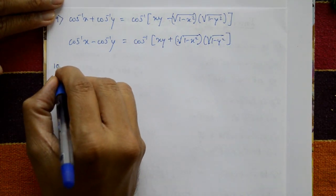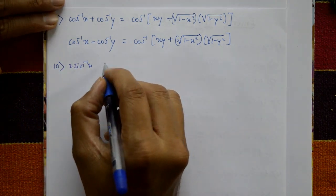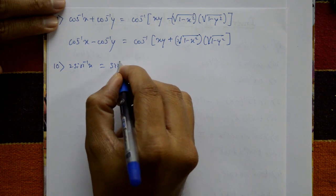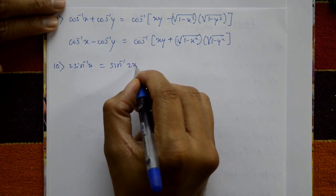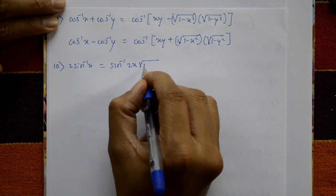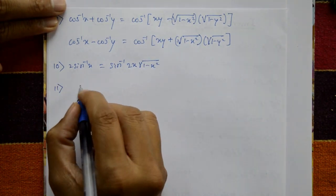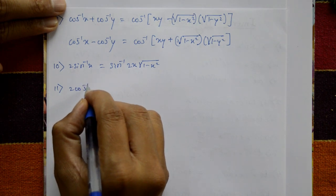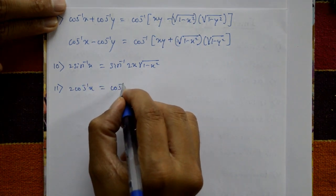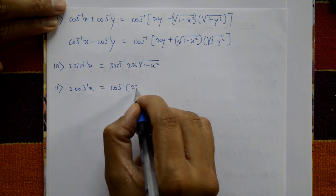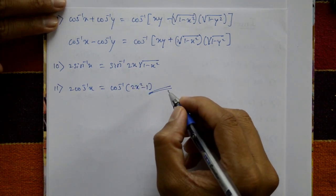The tenth one: 2 sine inverse x is equal to sine inverse of 2x into square root of 1 minus x square. The eleventh one: 2 cos inverse x is equal to cos inverse of 2x square minus 1. These are very important inverse trigonometric formulas.